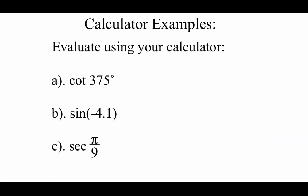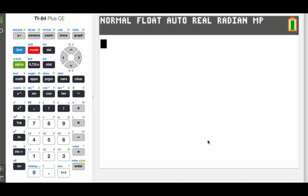These next few examples are going to use our calculator to evaluate some different trig functions. We're going to do the cotangent of 375 degrees, the sine of negative 4.1, and the secant of π over 9. For the first one, the cotangent of 375 degrees, the first thing I see is that it is in degrees.